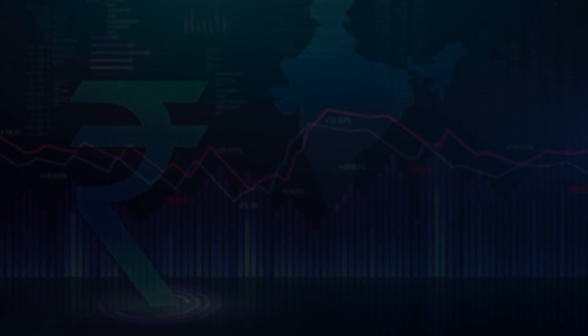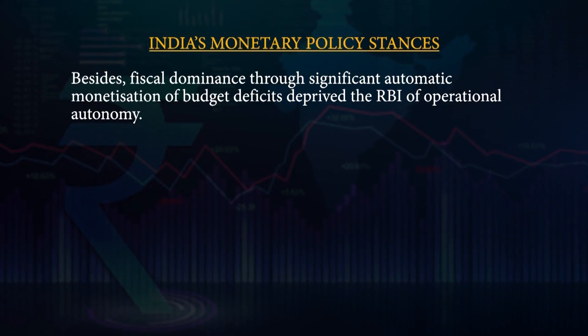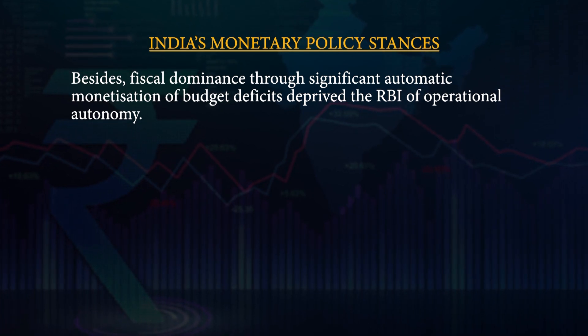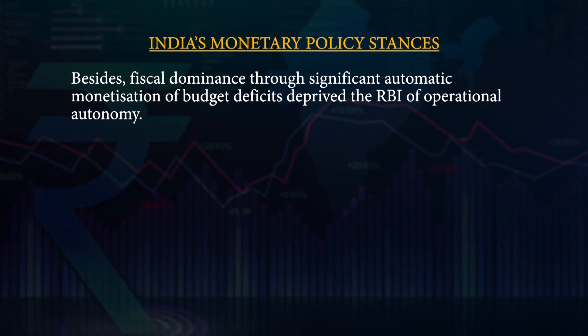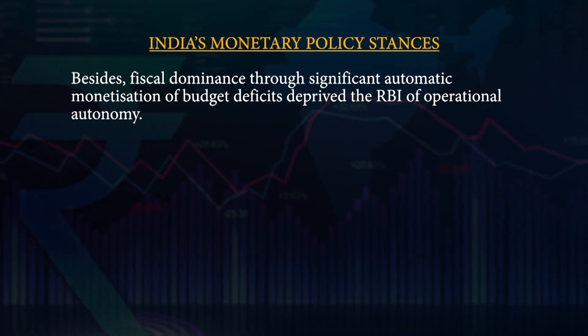In the absence of a well-functioning money market and predominance of RBI credit to the central government, the primary tool of monetary policy remained the traditional CRR — the cash reserve ratio — which aimed at controlling the overall money supply in the economy so that inflationary pressures could be controlled, while also keeping in mind that banks should be giving credit to the commercial sector. Besides fiscal dominance through significant automatic monetization of the budget deficits also deprived the RBI of any sort of operational autonomy.